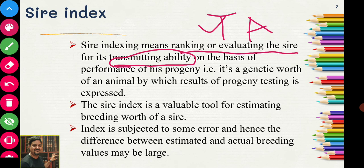The sire index is a valuable tool for estimating the breeding value of a sire. Many times this index is subjected to some error, and hence the difference between estimated and actual breeding value may be large. These indices are in some way biased, so the expected and estimated breeding value may differ. We have to consider those sire indices which show minimum bias or minimum error.